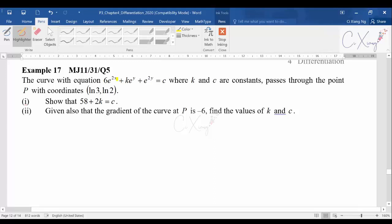Here they give you an equation where k and c are constants that passes through point P with coordinates (ln 3, ln 2). First they want to show that 58 + 2k = c.